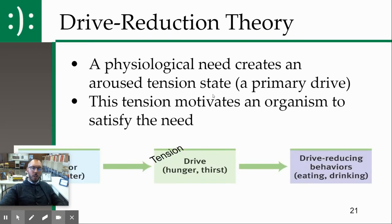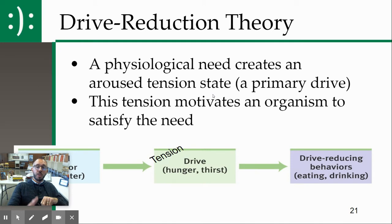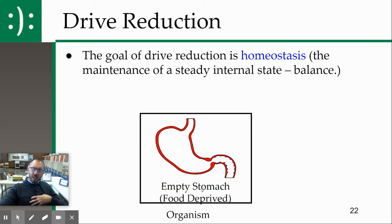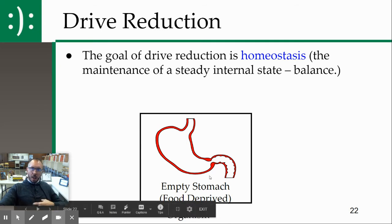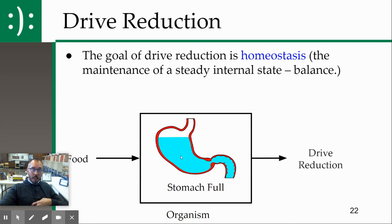Now let's get into the three theories of motivation. The first is drive reduction theory. The definition is in the term: you have a physiological drive — a primary drive — you have a state of tension, and therefore you go and reduce that need. Very simple. It's great to explain primary drives. The goal of drive reduction is homeostasis. You have an empty stomach — that's the drive, it creates a tension — and then you eat and hopefully you stop at homeostasis, which reduces the drive.